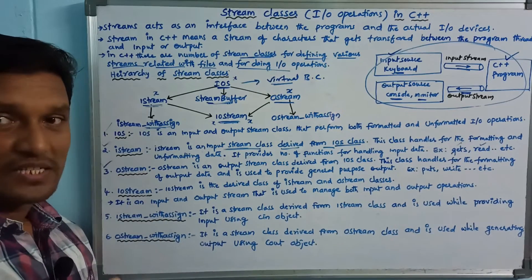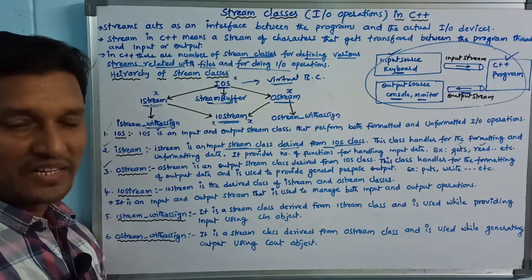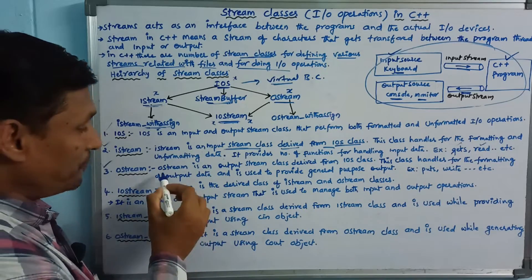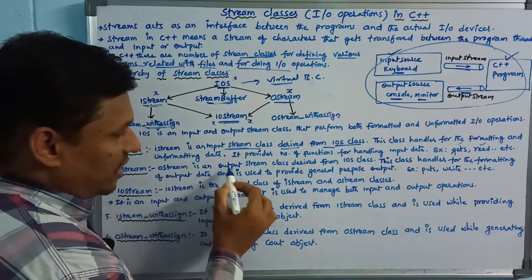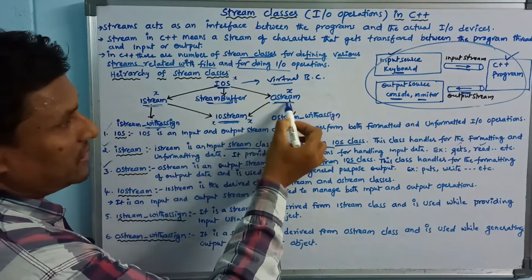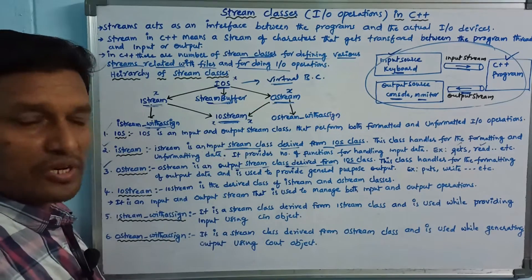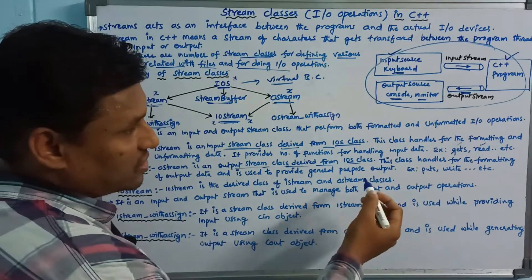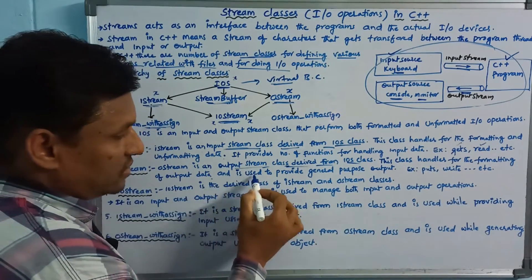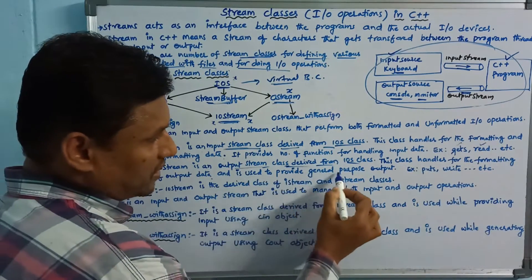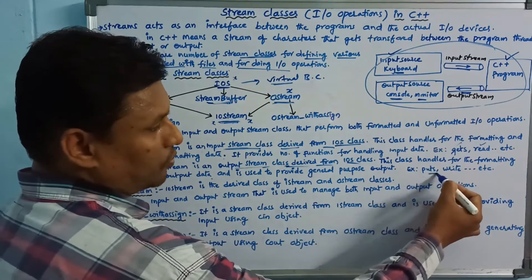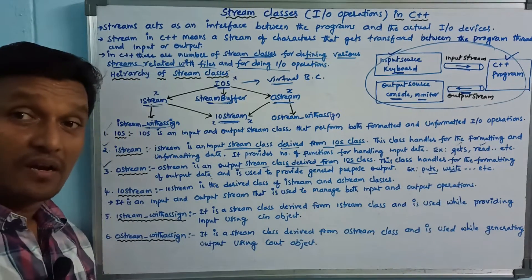Ostream is an output stream class derived from the IOS class. This class handles the formatting of output data and is used to perform general-purpose output. Functions include put, write, etc.